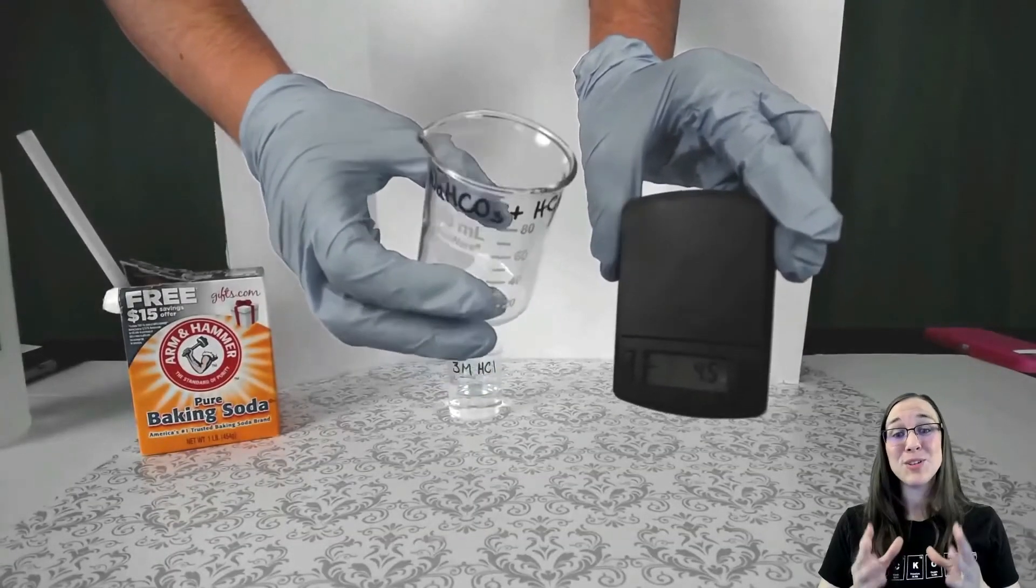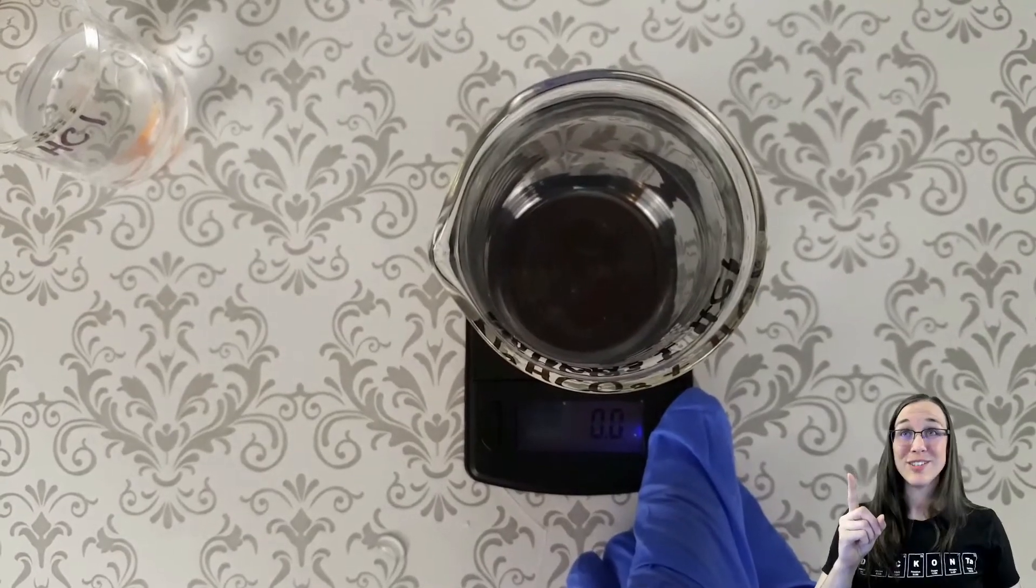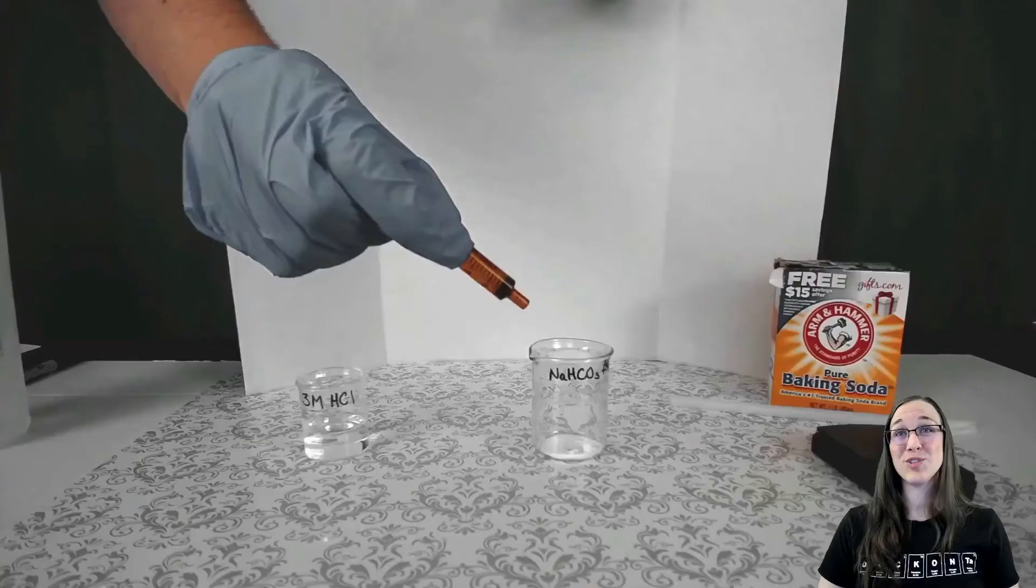Now we need to mass out 2 grams of baking soda. But first, always zero your scale. Don't you love my makeshift scupula? Yeah, that's a straw. Cool!